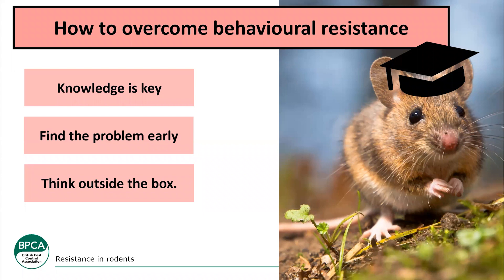Don't forget contact products — contact rodenticides, gels, and foams. Rodents don't need to sit and feed on these directly; they consume them while grooming after picking them up on their fur. Rodents spend around 20% of their day grooming, so there's a significant opportunity for ingestion through this route. Also consider that rodents have different food preferences depending on what's available on site — finding out what they're eating there is useful information for selecting effective trap attractants.